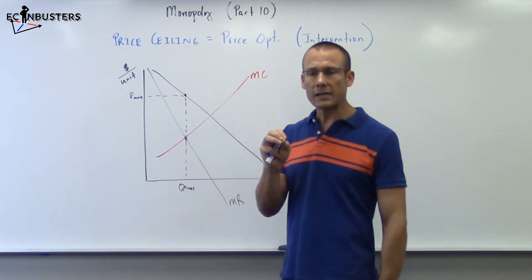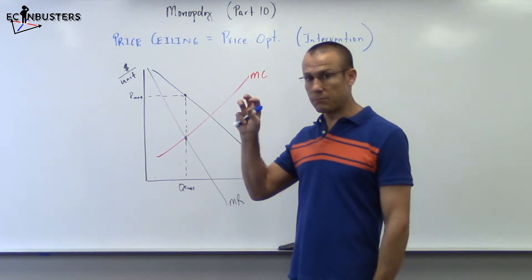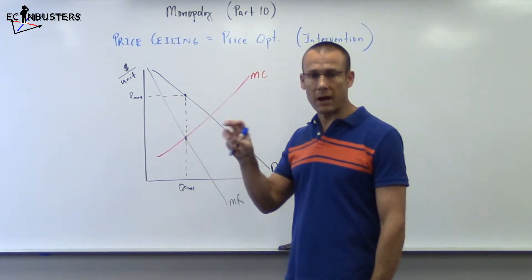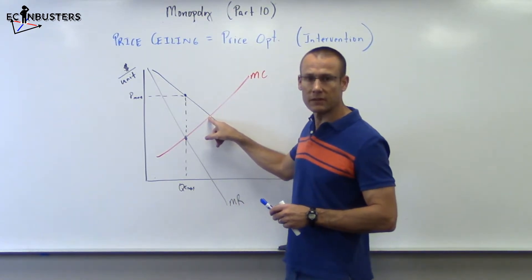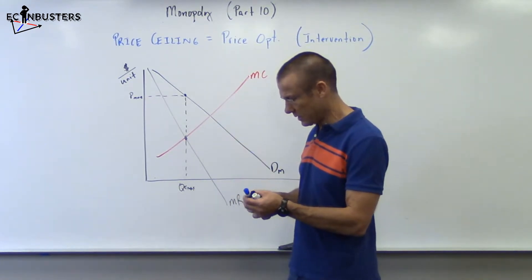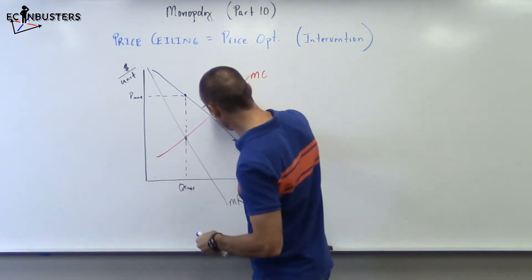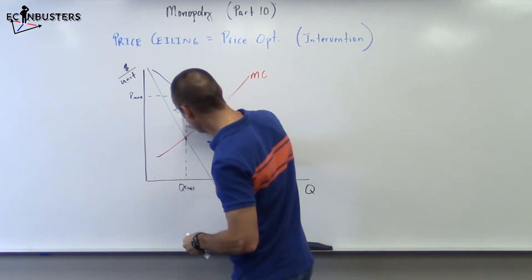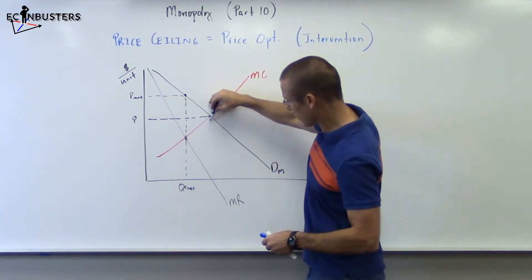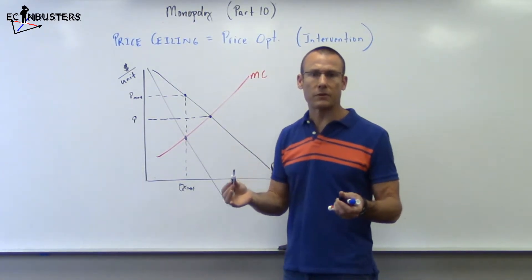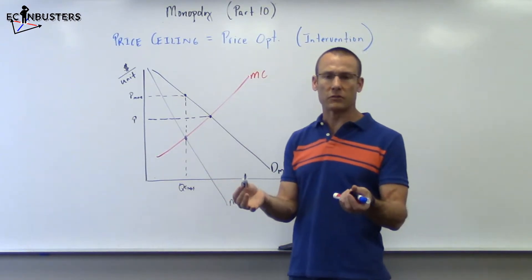It's at P opt, the price that would have given us the quantity optimum or the optimum quantity. And what is that? That's right here where MC and demand are intersecting. So if we would have had a price right there, we would have produced all the way to Q opt.